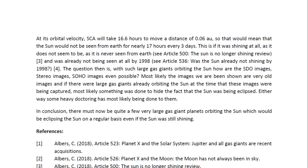So that would mean that the Sun would not be seen from Earth for nearly 17 hours every three days. This is if it was shining at all, as it does not seem to be, as it is never seen from Earth. And you may look at Article 500, The Sun is no longer shining, review for more details. And was already not being seen at all by 1998. And you may look at Article 536, Was the Sun already not shining by 1998 for more details.